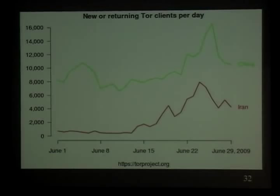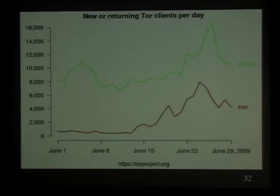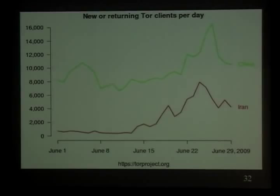China has a habit of blocking things as a show of power to say 'remember we're still in charge,' which then teaches a whole lot of people how to use tools like TOR, and then they back off because people are getting angry. They're sort of inoculating their populace against censorship — going through this round over and over, teaching more and more people and then backing off. There are now a lot of people in China who know how TOR works.